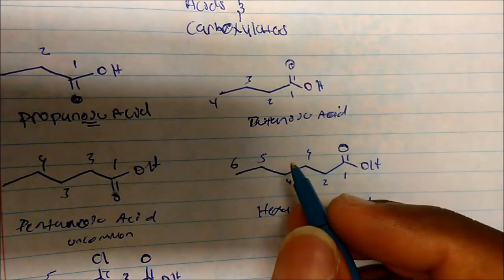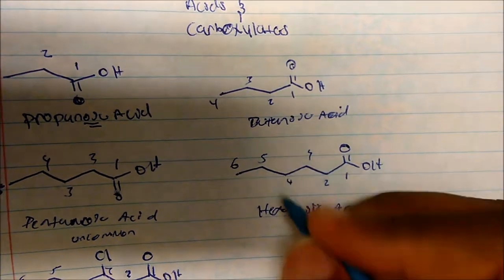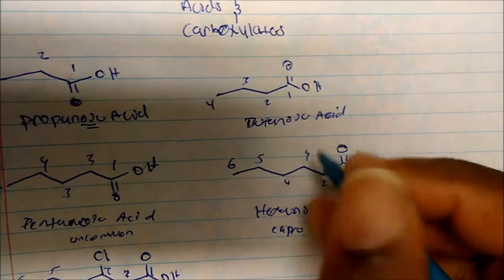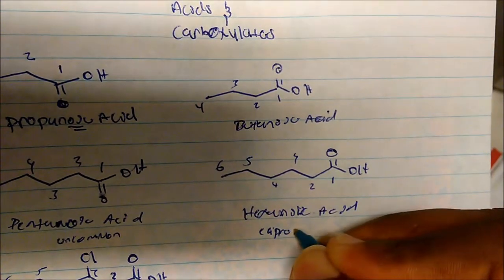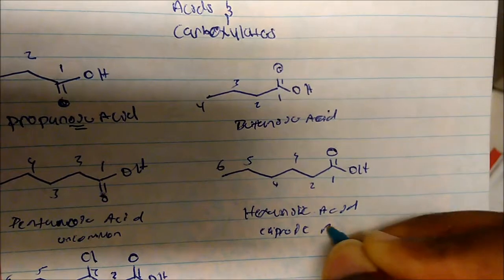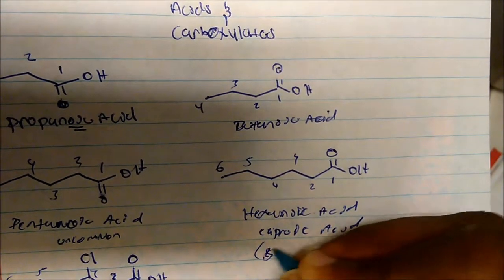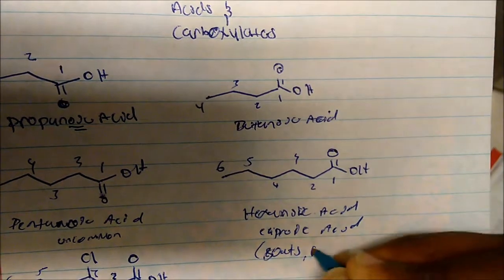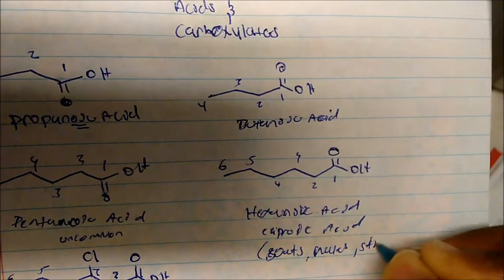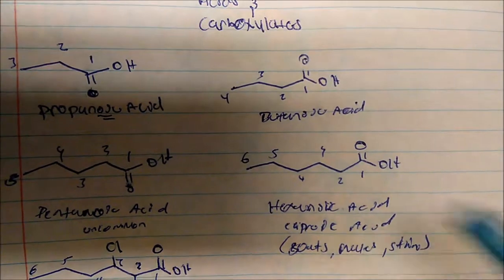Hexanoic acid is actually pretty common. The common name for it is caproic acid, and these are usually found in goats, especially males, and they stink. Biological systems are usually made up of an even number of carbons.